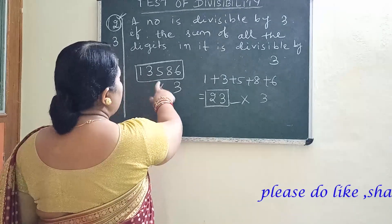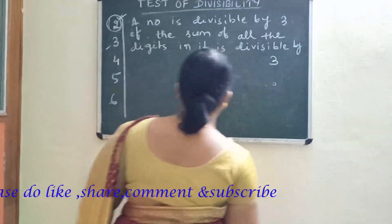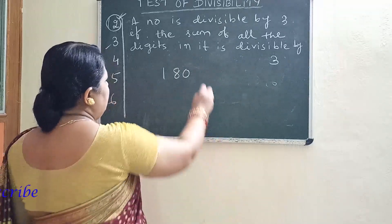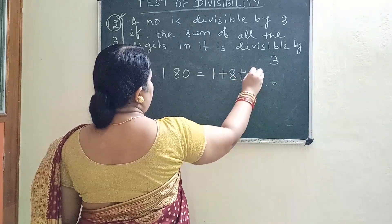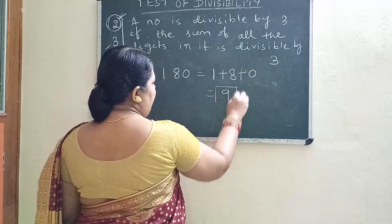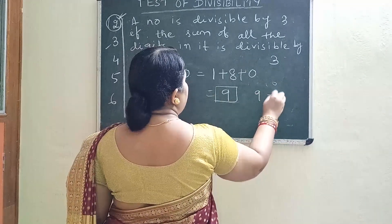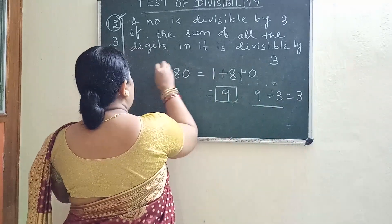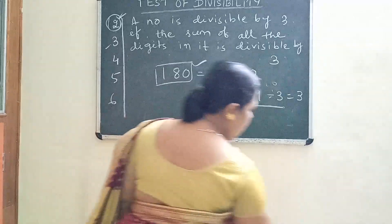Let me take one more example: one hundred eighty. We add all the digits: one plus eight plus zero equals nine. Is nine divisible by three? Yes — nine divided by three gives three. So one hundred eighty is completely divisible by three. This is the rule for divisibility by three: add all the digits and check if their sum is divisible by three.